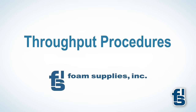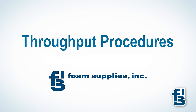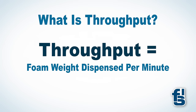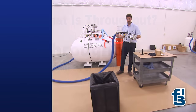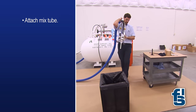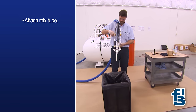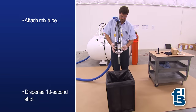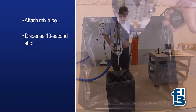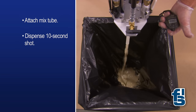Now we are ready to check throughput. We define throughput as the weight of the foam dispensed from the unit per minute, commonly referred to as pounds per minute or PPM. To verify throughput, first attach the mix tube, open all four ball valves, and dispense a 10-second shot into a plastic bag.